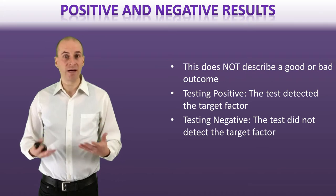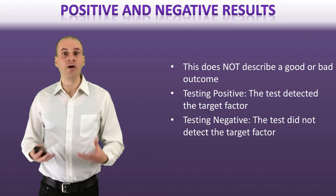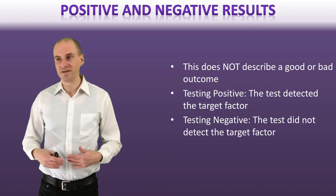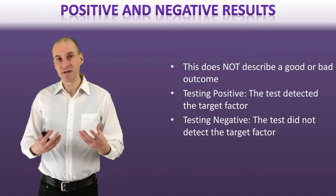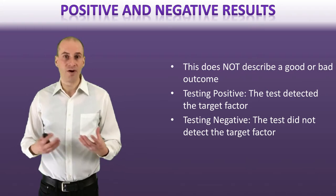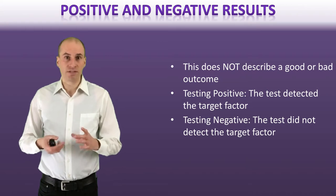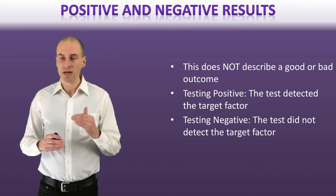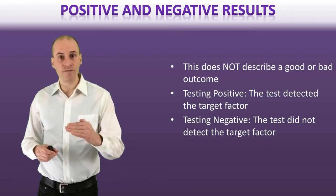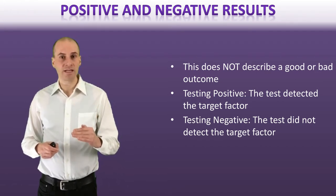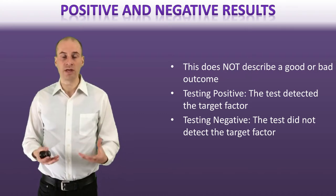Remember, testing positive for cancer is actually an unfavorable outcome, whereas testing negative for tuberculosis would typically be seen as a favorable outcome. So the two are often reversed, but it depends on the case. The main point is that when you test positive, it means that whatever you're looking for, you found. And when you test negative, you didn't identify that condition or factor that you're assessing.